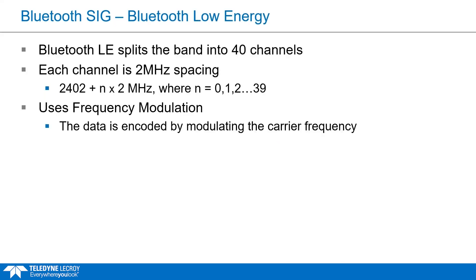As background on BLE, Bluetooth Low Energy is split into 40 channels spaced two megahertz apart. It uses GFSK frequency modulation, where bits are encoded into frequency shifts of the carrier frequency. There is a carrier frequency per channel when transmitting on that channel. Because it's an FM scheme, you increase or decrease the carrier frequency to encode the data bits.